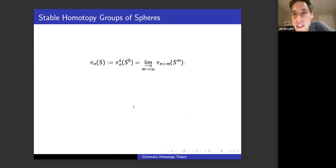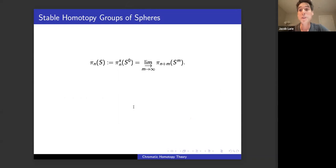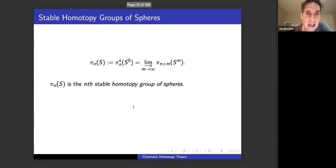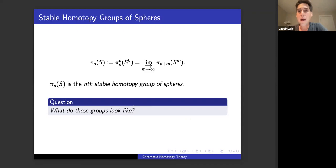The simplest case is to start with the zero-dimensional sphere. Its stable homotopy groups are called the stable homotopy groups of spheres, or the homotopy groups of the sphere spectrum. I'll denote the nth stable homotopy group of spheres by π_n of S. A basic question is: what do these groups look like?